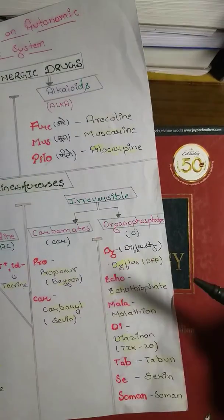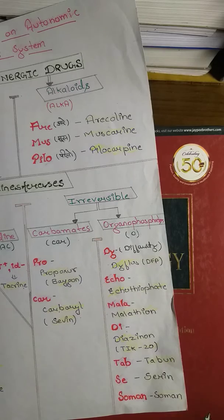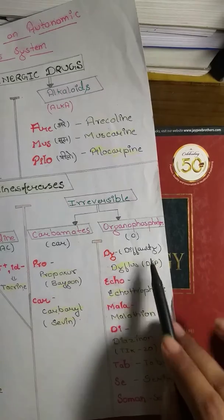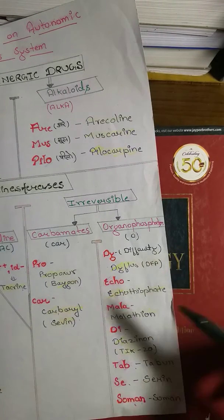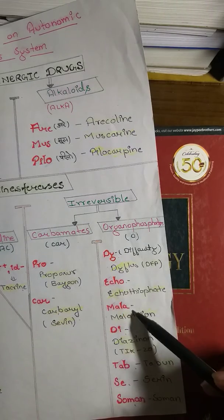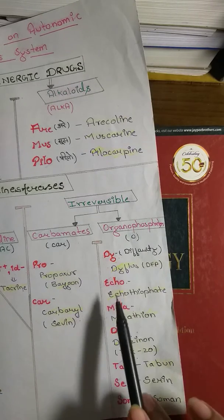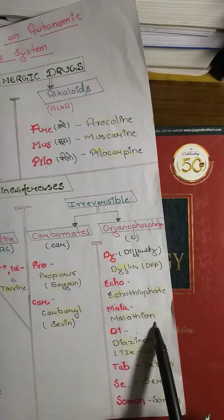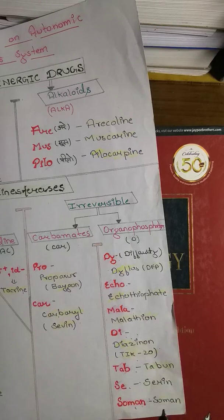For Organophosphates, we use a story: a boy named Suman tells his sister he is hearing a defaulty echo sound from the tap. From this mnemonic — tap se Suman defaulty eco — we get: Defloss (Dyflos), Ecothiopate, Malathion, Diazinon, Tabun, Sarin, and Soman.